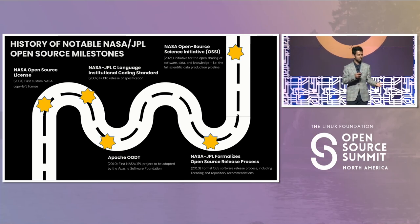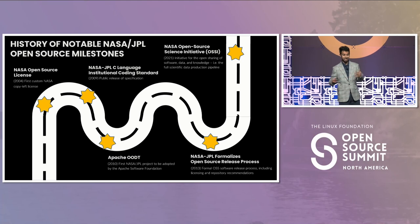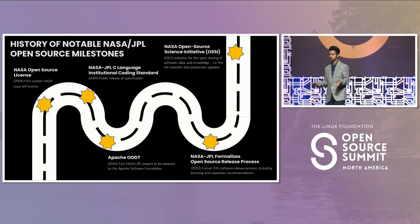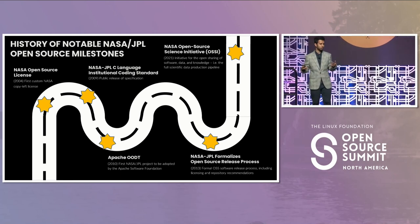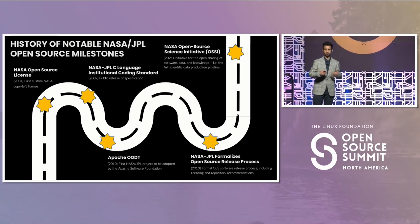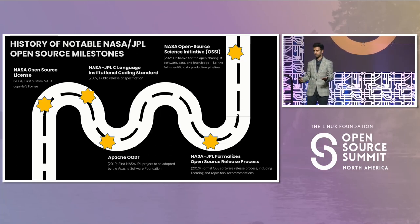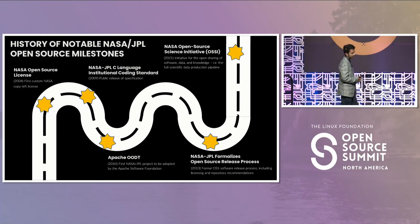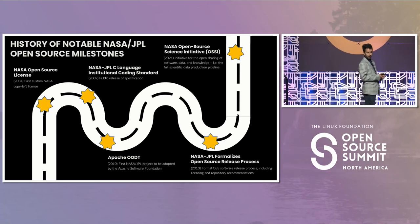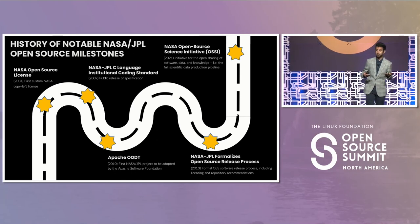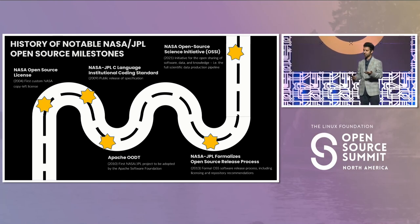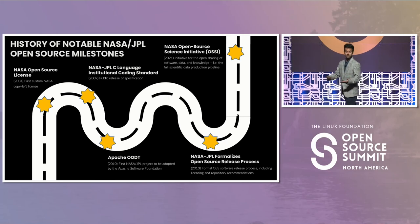In 2004, NASA first released an open source license that was copyleft, and that really set the stage for how to transfer intellectual property out to the open source. Nowadays we tend to use other popular licenses, but that helped set the stage. In 2009, NASA JPL released a C language standard, which helped establish some coding standards for the C language, and there are similar ones for other languages.